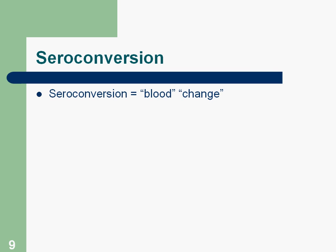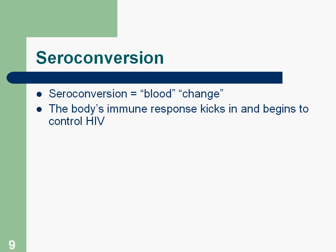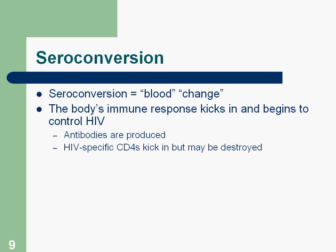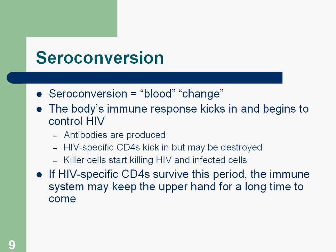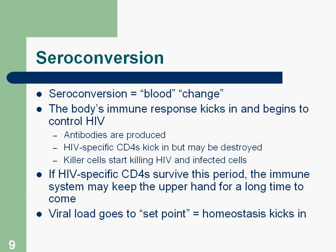The stage after acute or initial infection is known as seroconversion. This word breaks down: 'sero' means blood, and 'conversion' means change. The change in blood we're talking about is that the body's immune response to HIV begins to be found in the blood. Antibodies are produced, HIV-specific CD4 cells kick in but might be destroyed, and killer cells or CD8 cells start killing HIV and infected cells. If HIV-specific CD4 cells survive this period, the immune system can keep the upper hand for a long time.